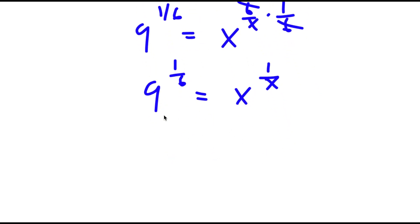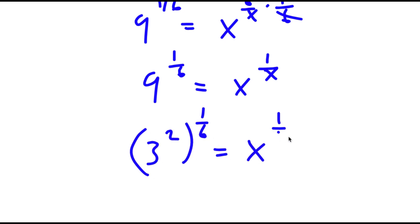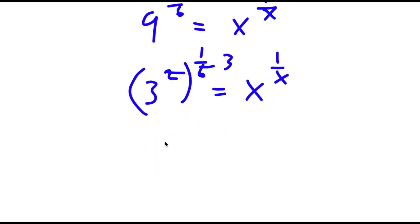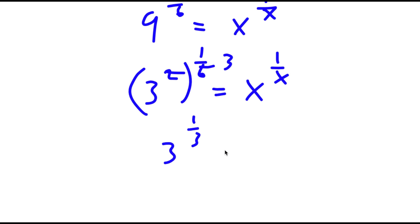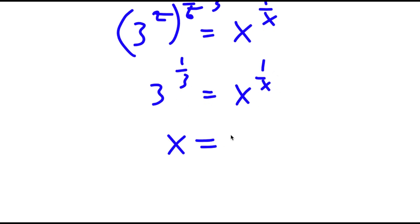Now 9 is the same thing as 3 squared, so I get 3 squared to the power of 1 over 6 is equal to x to the power of 1 over x. 2 and 6 make 3, so I get 3 to the power of 1 third is equal to x to the power of 1 over x. Notice how this is in the form x to the power of 1 over x — a number to the power of 1 over that same number — meaning x is simply equal to 3.